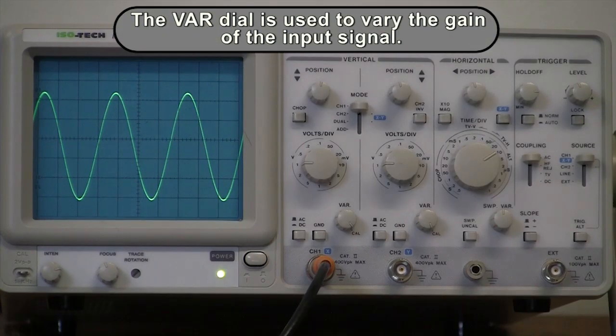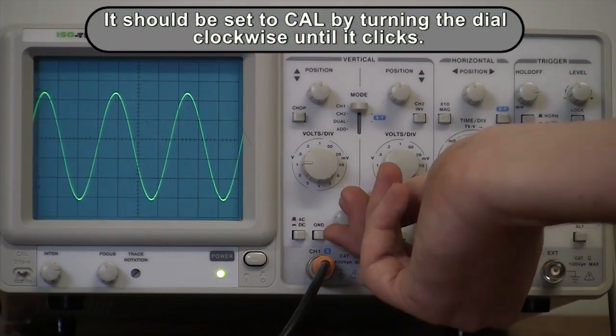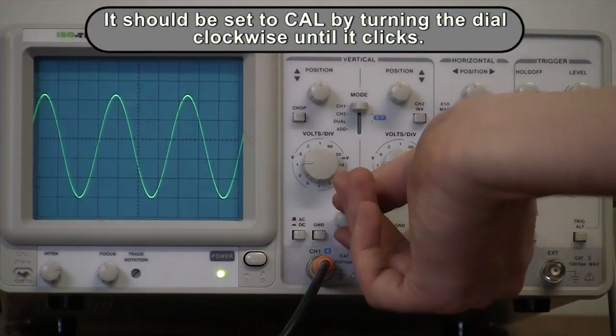The var dial is used to vary the gain of the input signal. It should be set to calibrated mode by turning the dial clockwise until the click is heard.